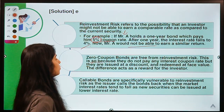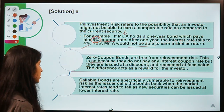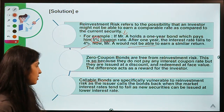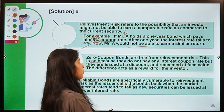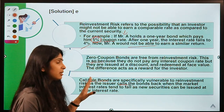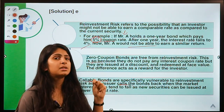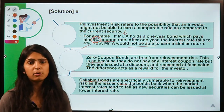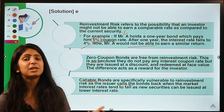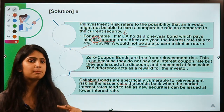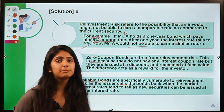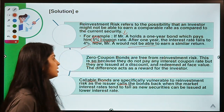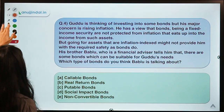With zero coupon bonds, you are not earning a fixed periodic income to compare against the next security — you already know you are going to be redeemed at a fixed face value. There is no coupon rate, so there is no reinvestment risk. However, callable bonds are vulnerable to reinvestment risk because the entity that issued the bonds can call them back whenever it is beneficial for them, and the investor might not be able to get a similar interest rate afterward.